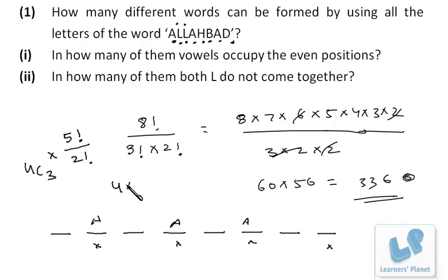In all, your answer is 4C3 × 5!/2!. So 4C3 is 4C1, which is 4. So 4 × 120/2, and your answer will be 240. In 240 cases, the vowels will occupy even positions.